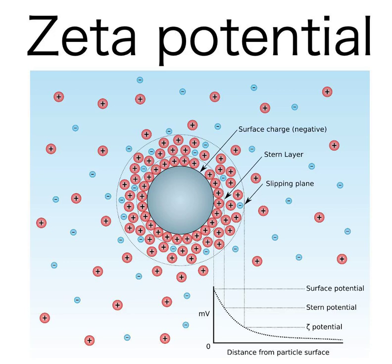The usual units are volts (V) or, more commonly, millivolts (mV). From a theoretical viewpoint, the zeta potential is the electric potential in the interfacial double layer (DL) at the location of the slipping plane relative to a point in the bulk fluid away from the interface.